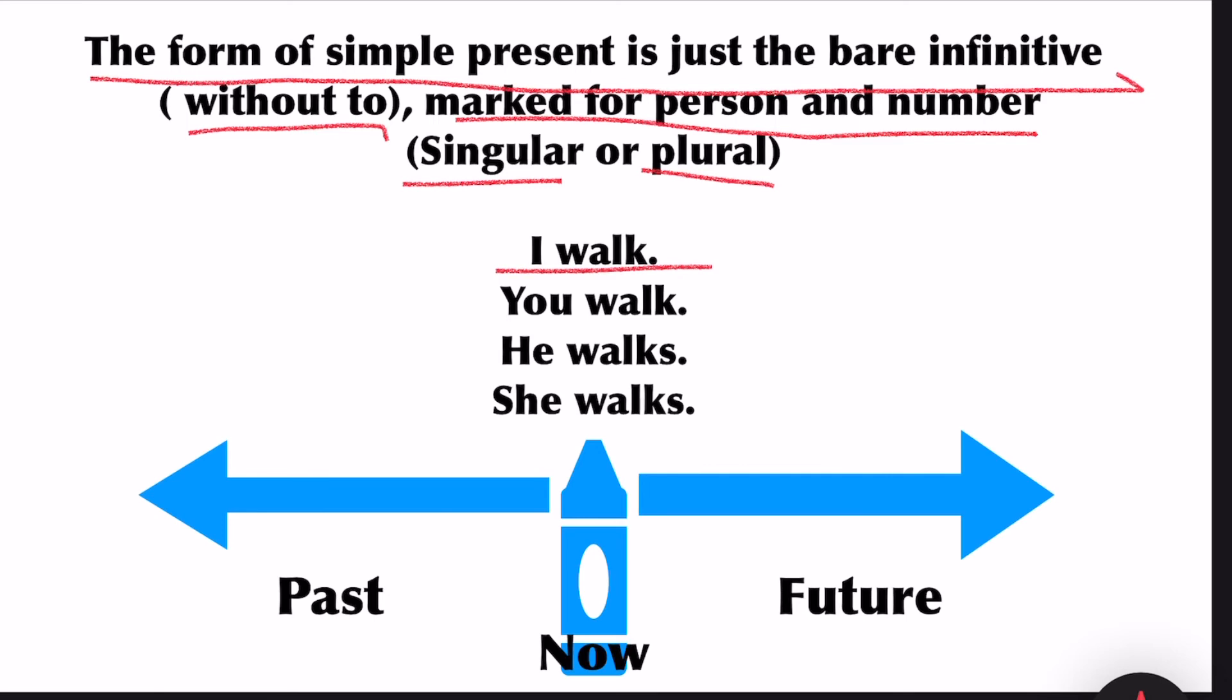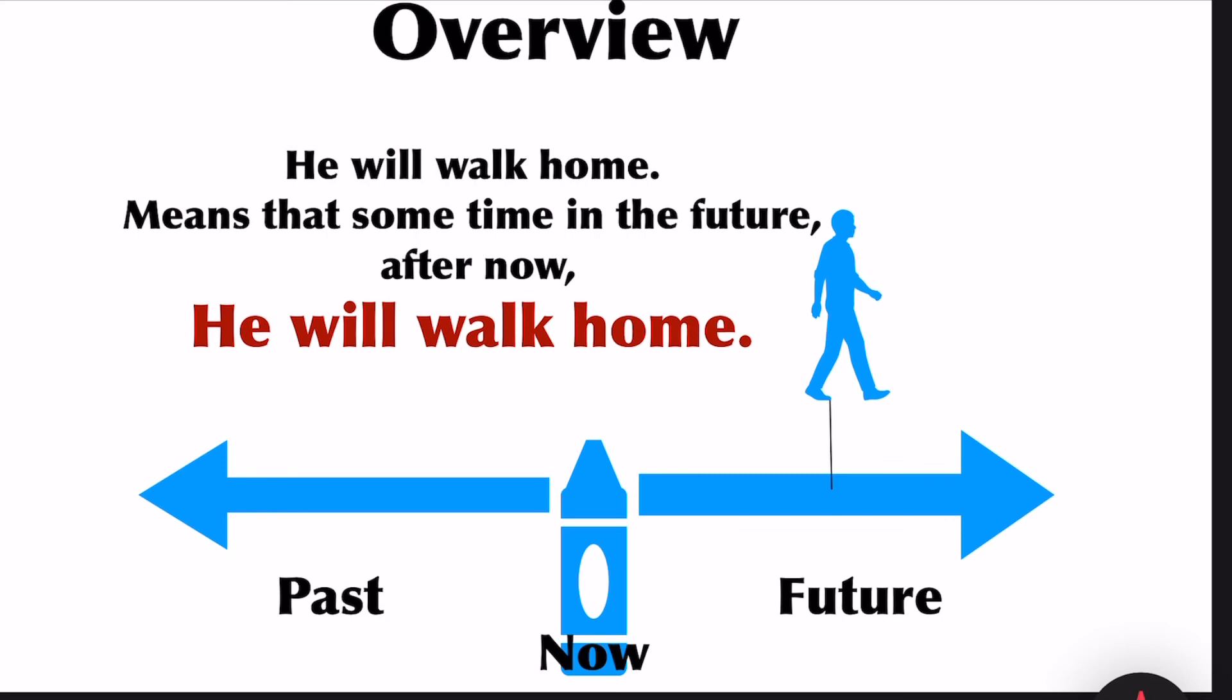I walk, singular. You walk, you can either be singular or plural. He walks, look at the change in the verb. For third person singular you have added an 's' with the verb. She walks. Next we are moving on to future tense.